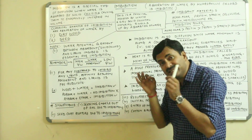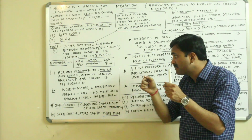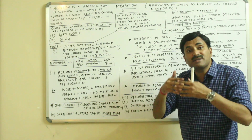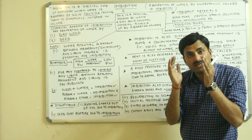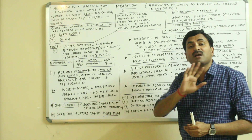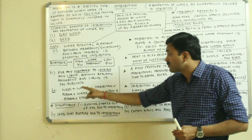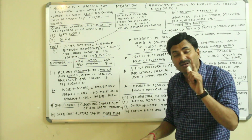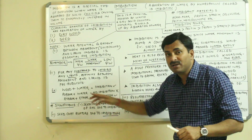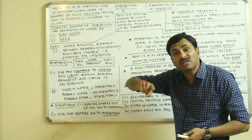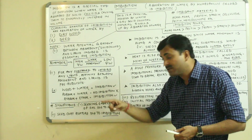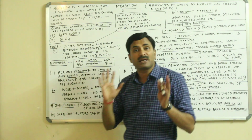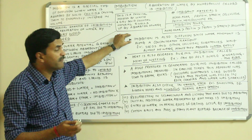In addition, for any substance to imbibe any liquid, there must be affinity between the absorbent and the liquid; only then will imbibition occur. For example, wood and water have affinity, so imbibition occurs. But rubber and water have no affinity, so water never enters a rubber tube — no imbibition. However, rubber does have affinity with ether, so if rubber is placed in ether, imbibition will occur.